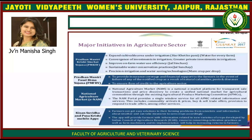The NAM portal services include commodity arrivals and prices, buy and sell trade offers, and tools to respond to trade offers. Pradhan Mantri Kisan Sampada and Pusa Krishi mobile apps allow farmers to get easy solutions to their farming problems from scientists, obtain weather information, and take measures to save their crops. The app also provides information on new varieties of crops developed by the Indian Council of Agricultural Research (ICAR).